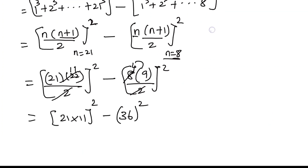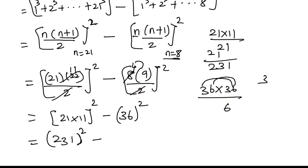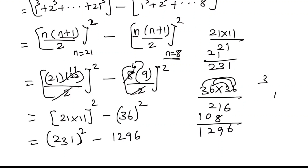21 into 11 is 231, to the whole square minus 36 squared. Now 36 into 36: 6 sixes are 36, carry 3; 6 threes are 18, plus 3 is 21, carry 2; 3 sixes are 18, carry 1; 3 threes are 9, plus 1 is 10; so 6, 8 plus 1 is 9, 2, 1. So 36 squared equals 1,296.